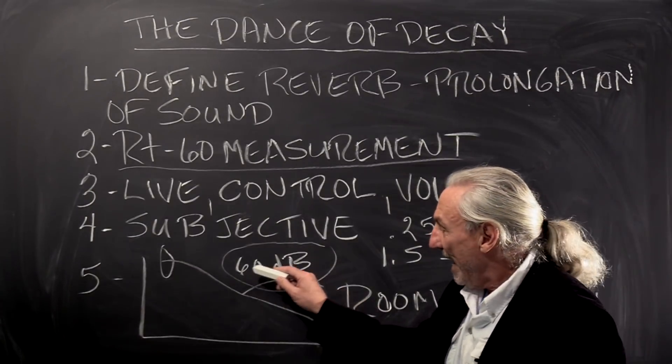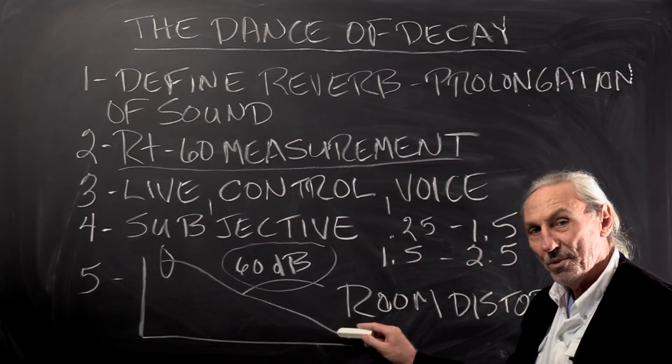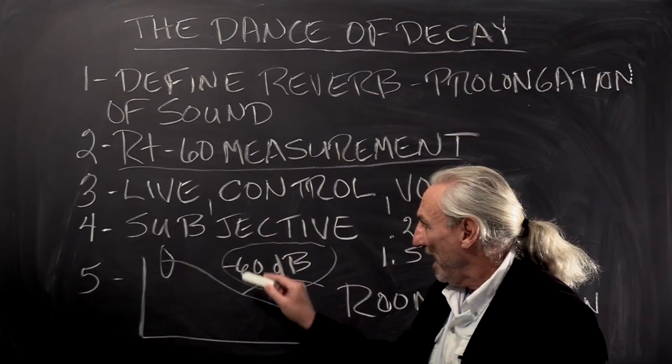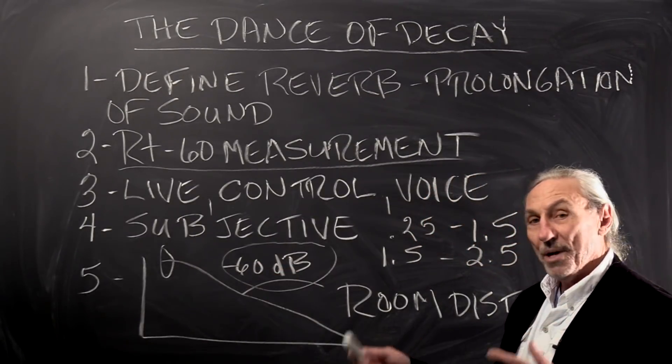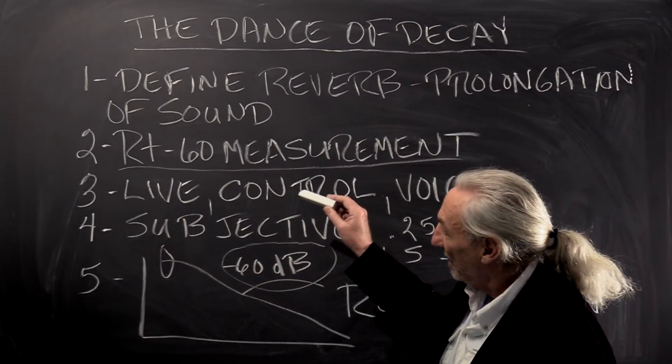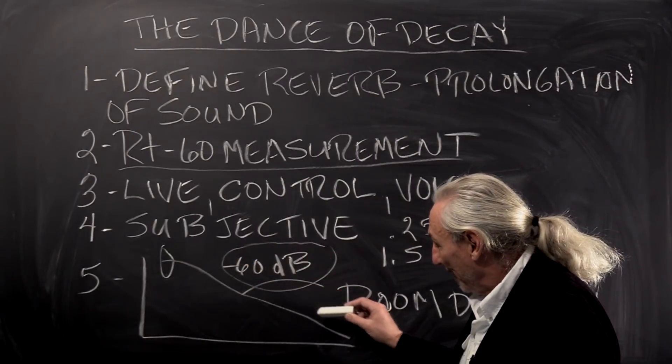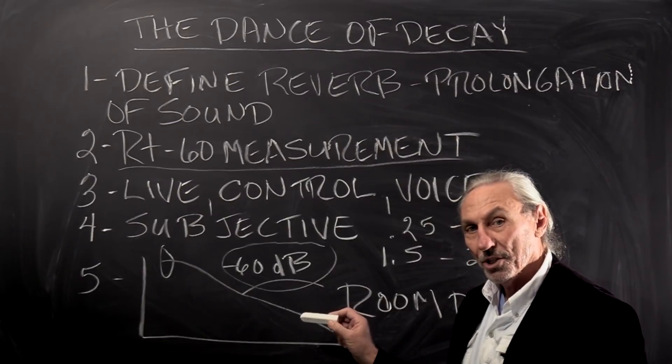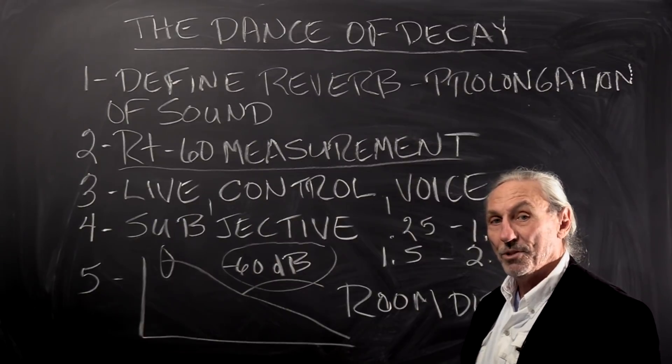So as this reverberation time in your room, which is the reflections off the wall surfaces, starts to decay and go down at least 60 dB, then we have intelligibility. But during that process, during the fundamental and the strike of the fundamental and the decay rate, all of this is room distortion. So high reverberation times equal high room distortion.